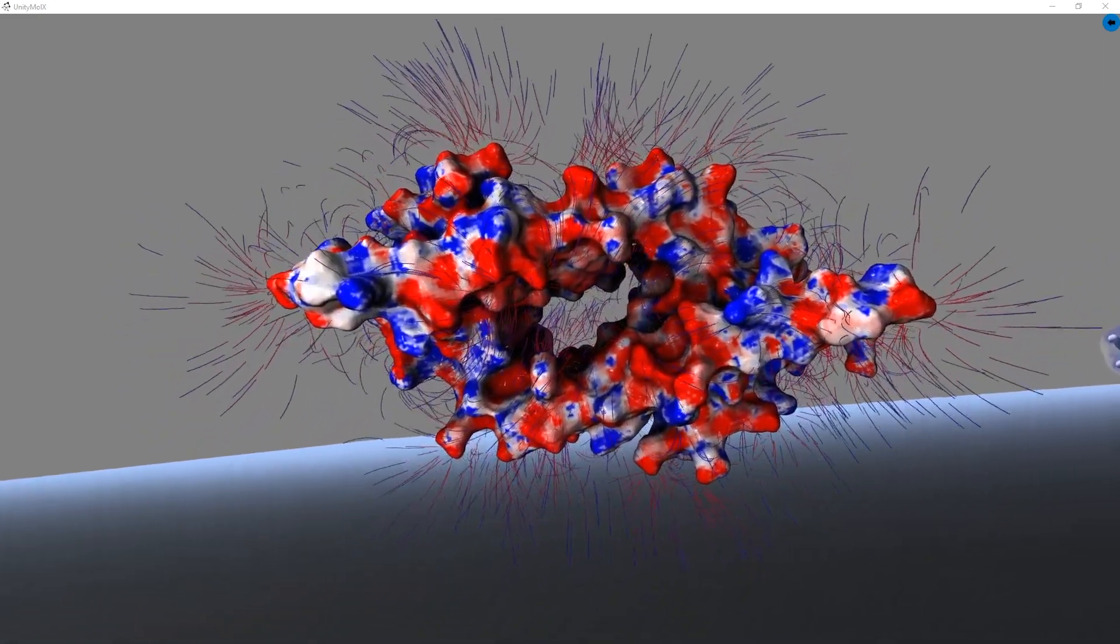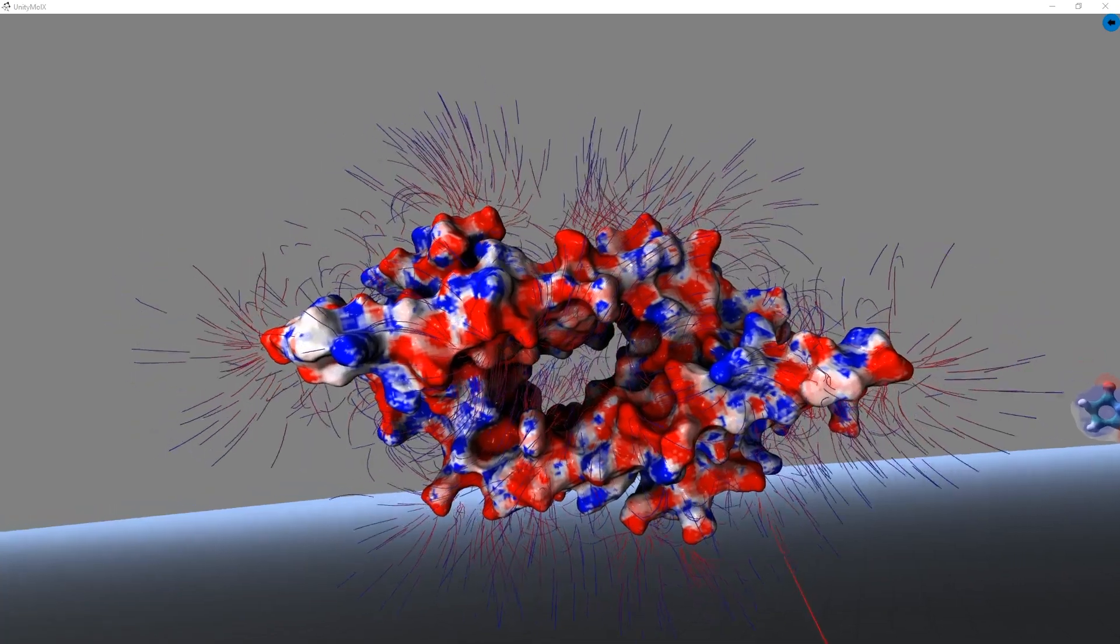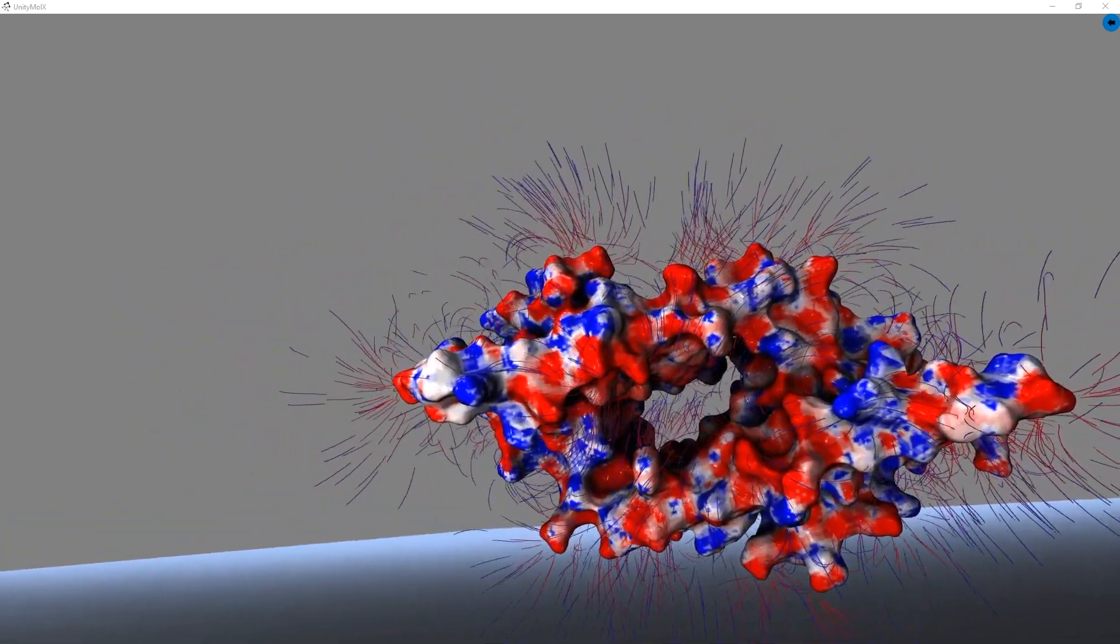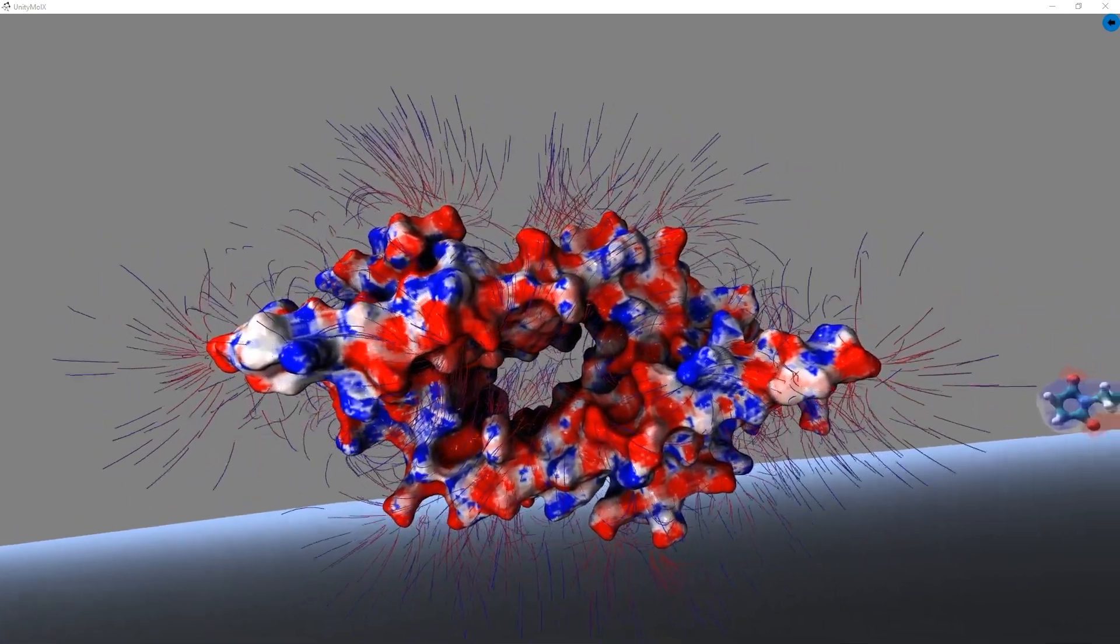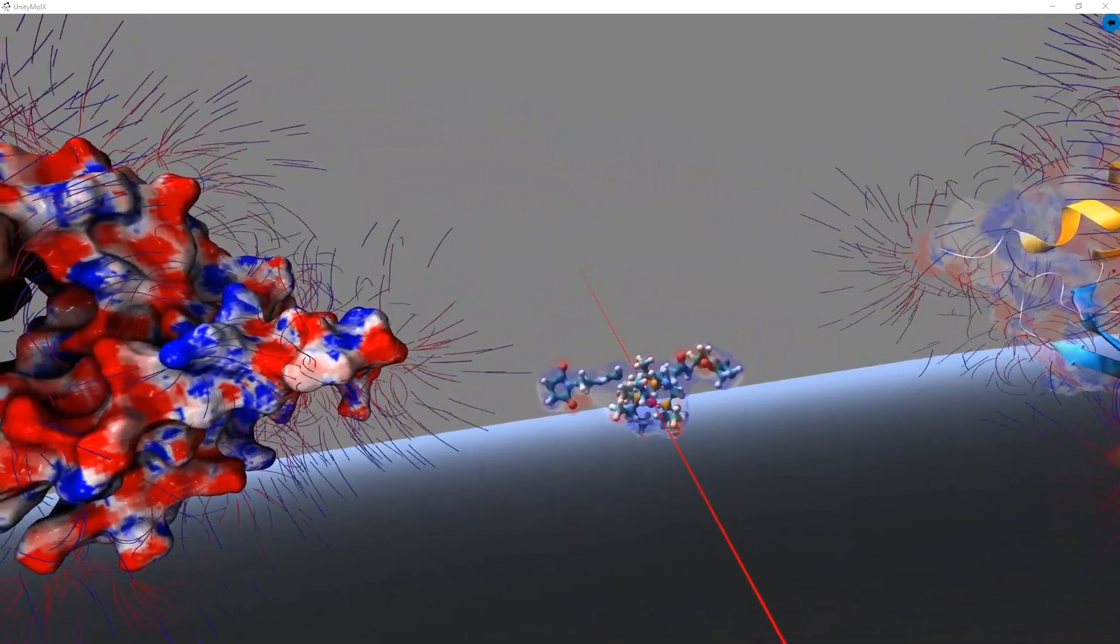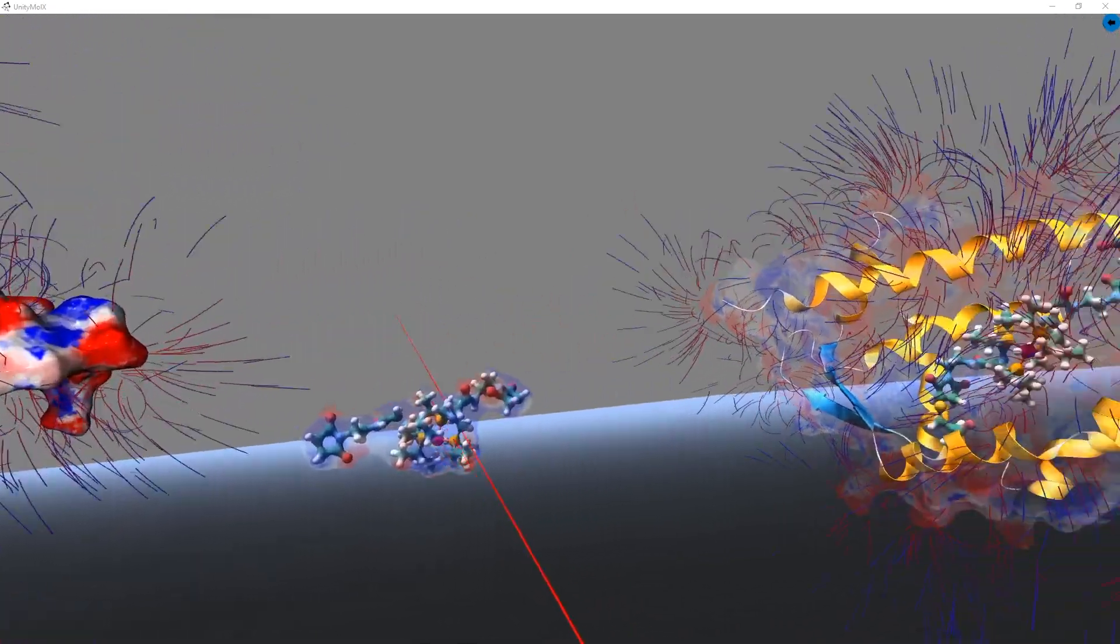As you can see for the APO LMRR system, we are showing the surface as a solid representation, whereas for our inorganic rhodium complex and the artificial enzyme, we are showing a transparent surface.